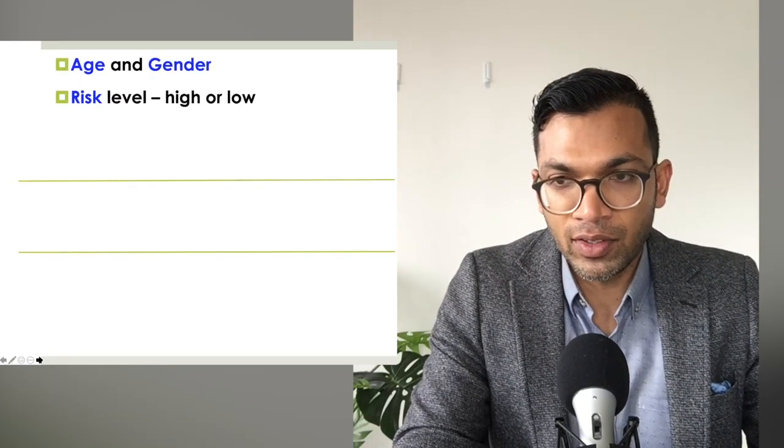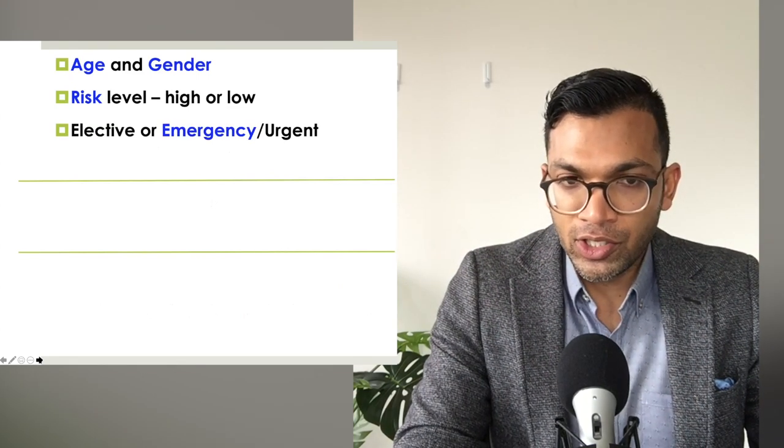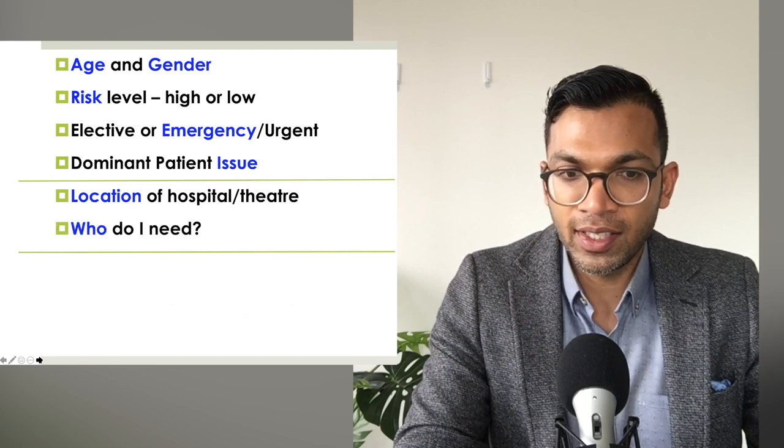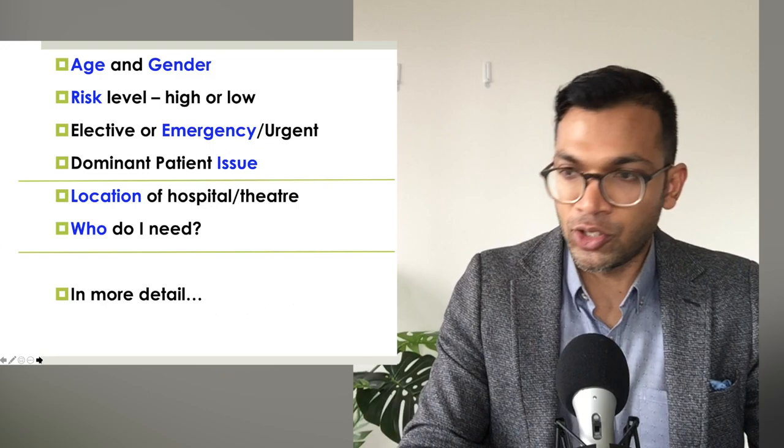To summarise the framework: age, gender, risk level - your overall perception - elective, urgent, or emergency surgery, dominant or critical patient issues, location if relevant, who you need if relevant, and then in more detail you add layers to each issue identified. Recapping everything covered: chronologically, we've gone through assessing the patient, simple optimisation steps, risk-benefit profile, consent process, surgical issues, basic anaesthetic plan covering GA vs regional, ETT vs LMA, paralysis, the triad, monitoring, pain plan, post-op destination, and finally case presentation identifying critical issues.